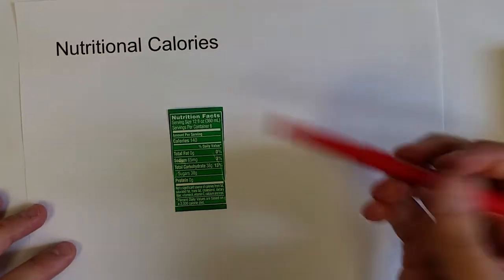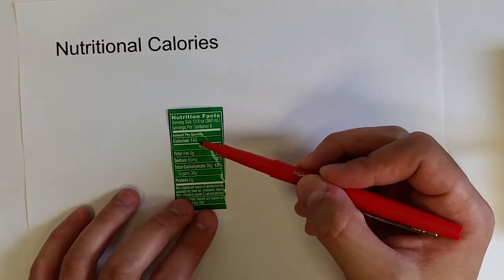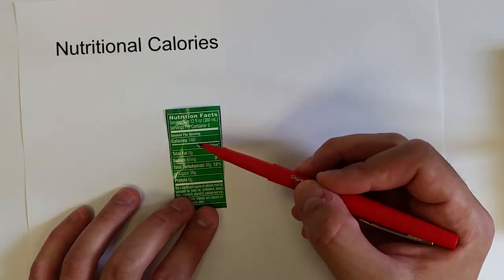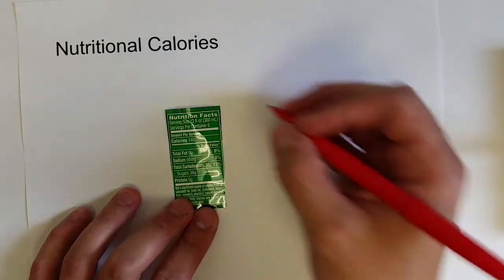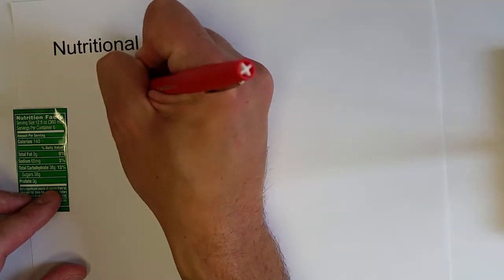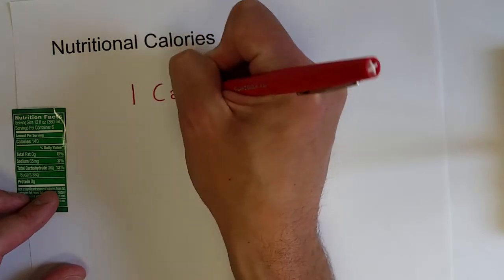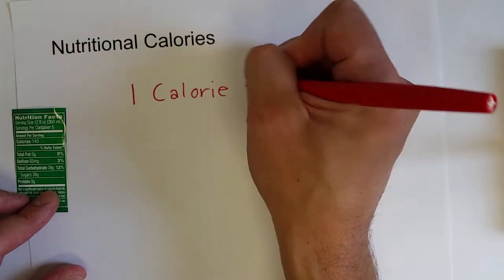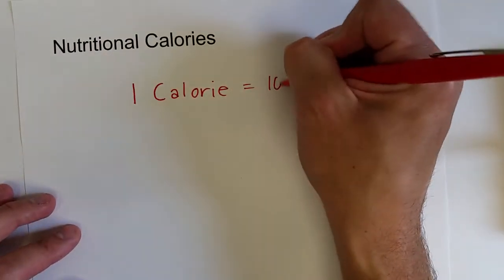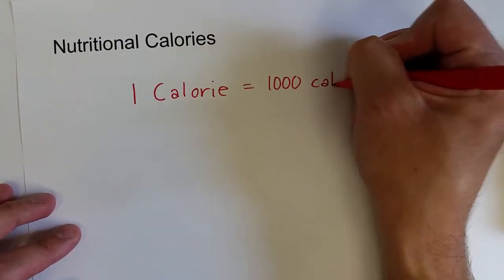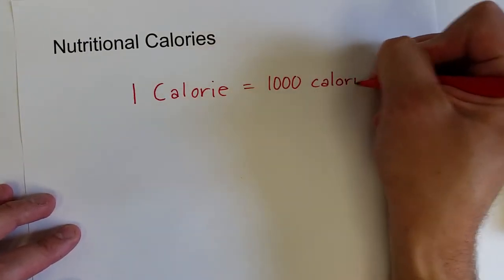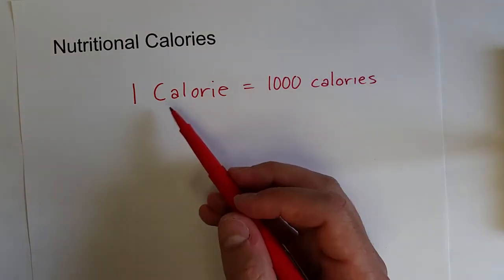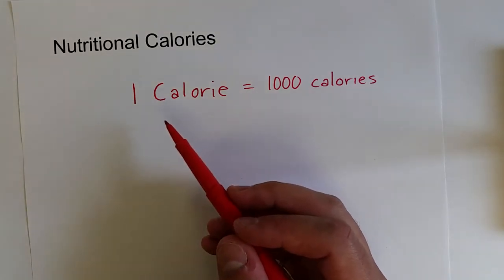So I cut out this nutrition fact label from a product, and it says that this, in amount per serving, has 140 calories, but that is a capital C calorie, and that's not the same thing as the calories that I defined in the last video. So one capital C calorie is actually equal to 1,000 small, lowercase, c calories. So one capital C calorie, in terms of nutrition, will actually raise the temperature of one gram of water 1,000 degrees Celsius.